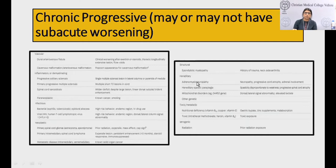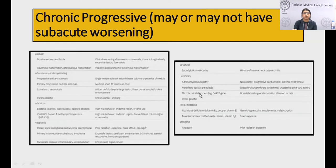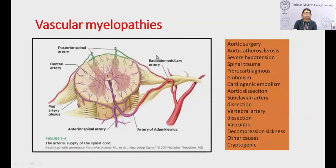Hereditary myelopathies often don't affect the spinal cord in isolation — they usually have other structure involvement in the brain or peripheral nerves.